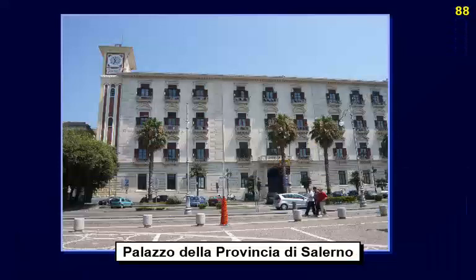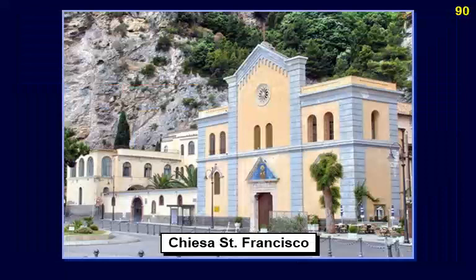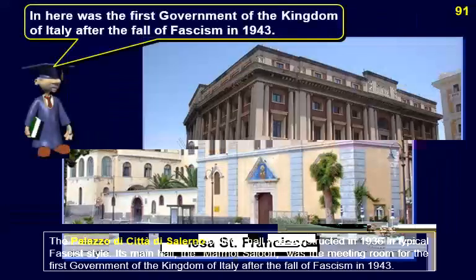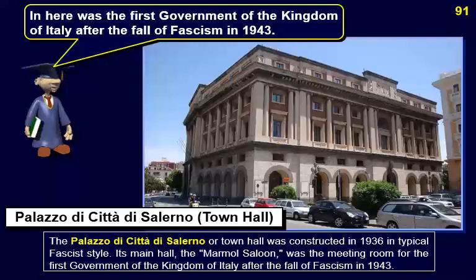This is the Palazzo della Provincia di Salerno, the Temple of Sari Urthina, and the Chiesa di San Francesco in Salerno. The Palazzo di Città di Salerno, or Town Hall, was constructed in 1936 in typical fascist style. Its main hall — the marble saloon — was the meeting room for the first government of the Kingdom of Italy after the fall of fascism in 1943.